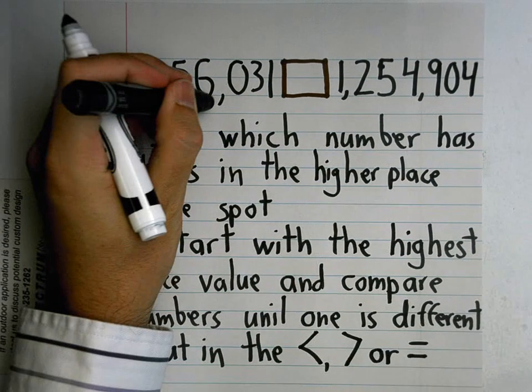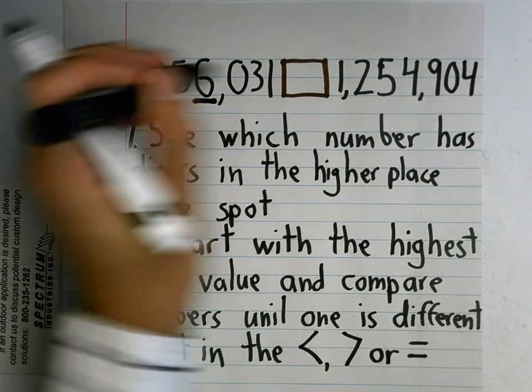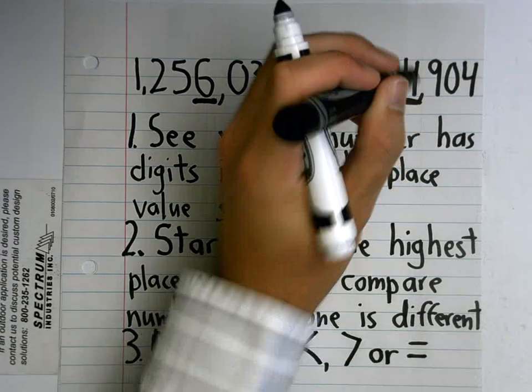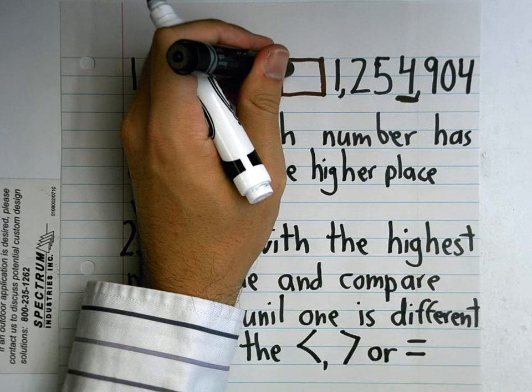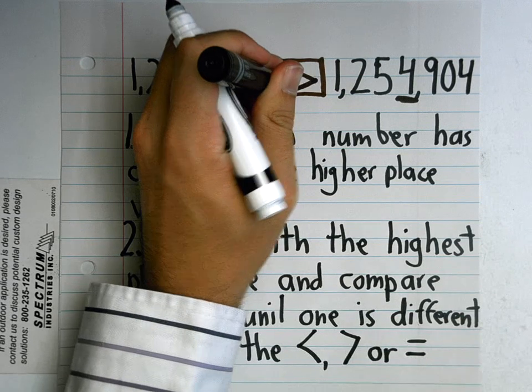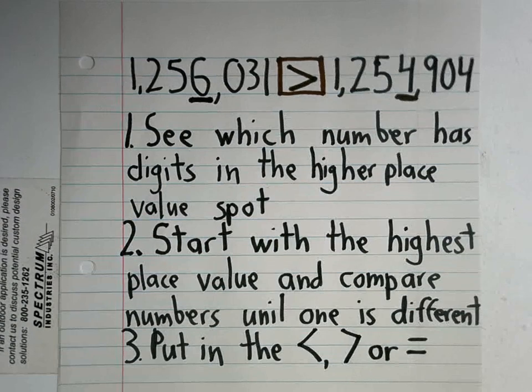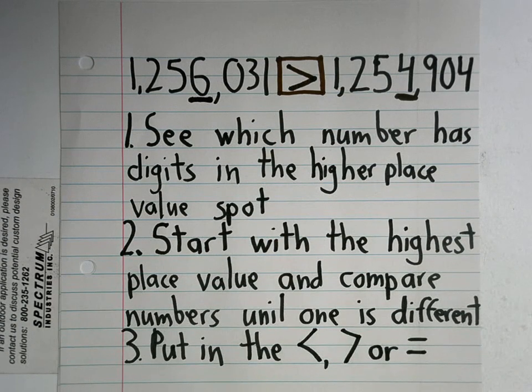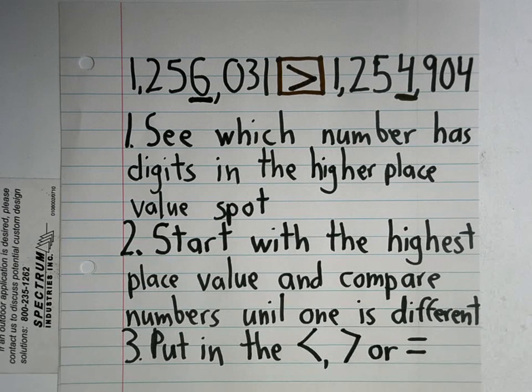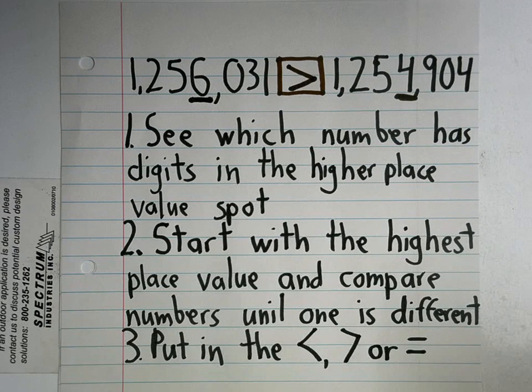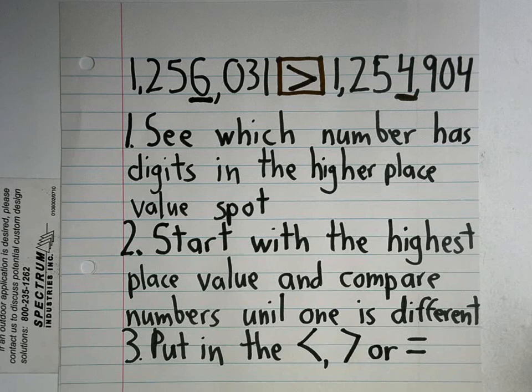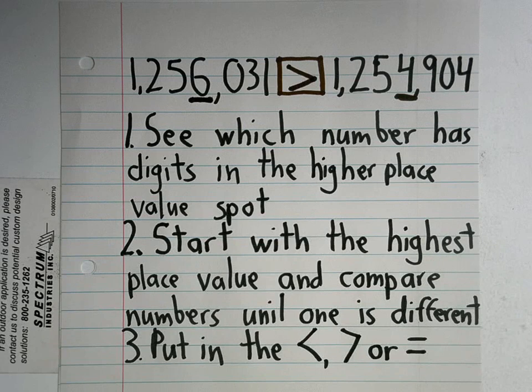It's greater than, because once we got to the ten thousands place, they were different and this number was larger. So we use the greater than sign, or the hungry alligator wants to eat that bigger number because it has a 6 in the ten thousands place instead of a 4. So it's the same concept that you've done since all the way back in first grade, but we're adding more numbers. When you add more numbers, you have to look really carefully each time at each different place value.